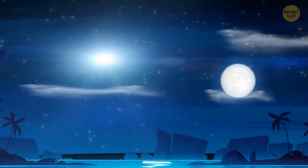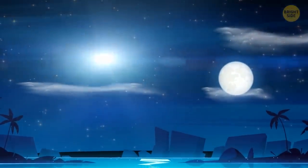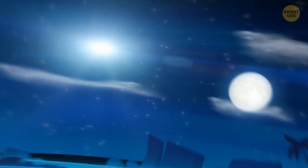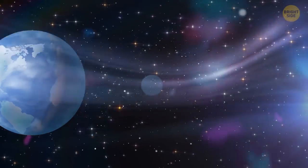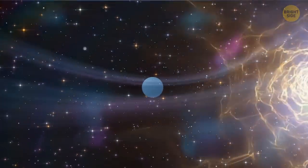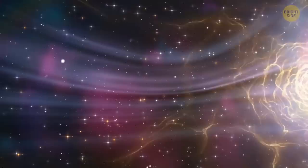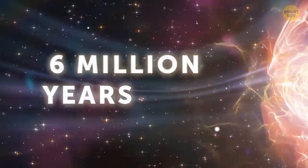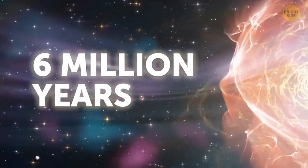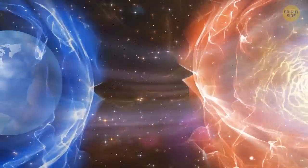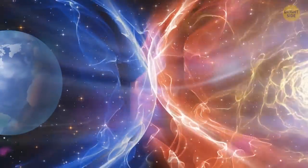A supernova explosion will be so blinding that Betelgeuse will shine brighter than the moon in the night sky. Luckily, Earth is too far away for this explosion to cause any harm to people. A strong stream of matter that will be ejected from the explosion site won't reach the solar system until 6 million years later. Even so, the solar wind will stop this flow. So we'll be safe.